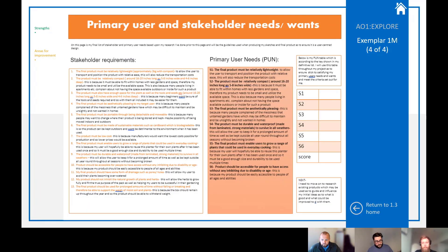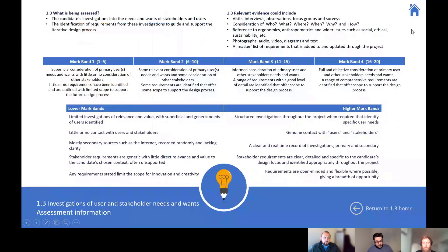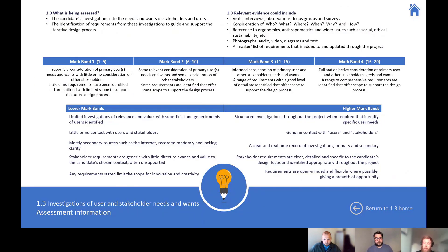Looking at the criteria from the exam board, one thing that pops out for the higher mark bands is to evidence genuine contact with users and stakeholders. Having photographic evidence is one way to show the assessor that interaction has taken place — that you've actually had that conversation with a stakeholder or primary user. There are other ways of doing it too, and we'll look at a few more exemplars that evidence further methods of showing your research.